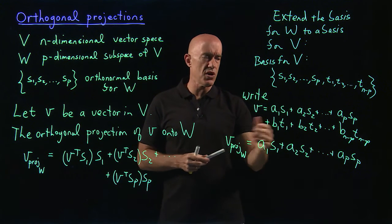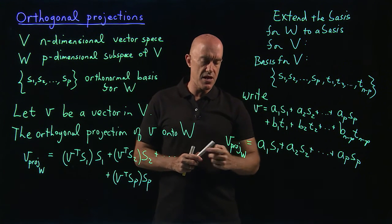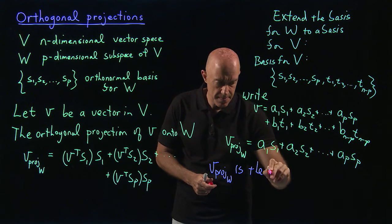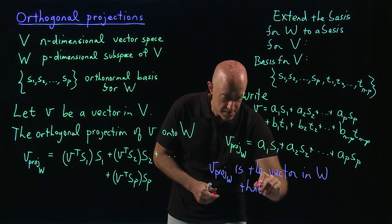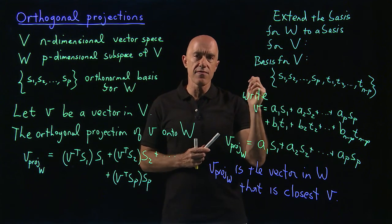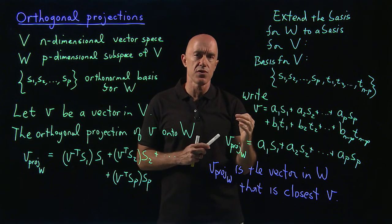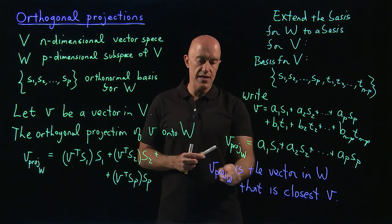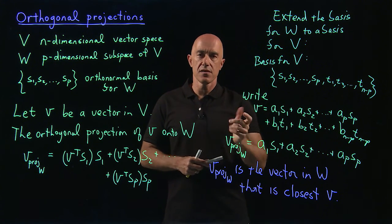There's an important result that one can derive — not very difficult, but I won't do that here. The projection of v onto W is the vector in W that is closest to the original vector v. So if you want to find a vector in W that is closest to a given vector v in the big vector space V, you project v onto W. That will be useful when we talk about the least squares line.